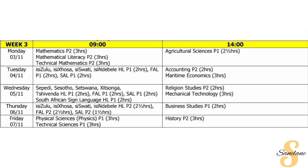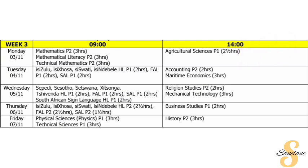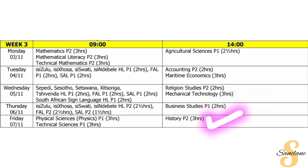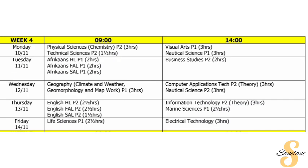In Week 3, we will kick it off by covering Mathematics Paper 2 as well as Math Literacy Paper 2. We also have Agriculture Paper 1, Accounting Paper 2, and Religion Paper 2. Then we also have Business Studies Paper 1 and History Paper 2.